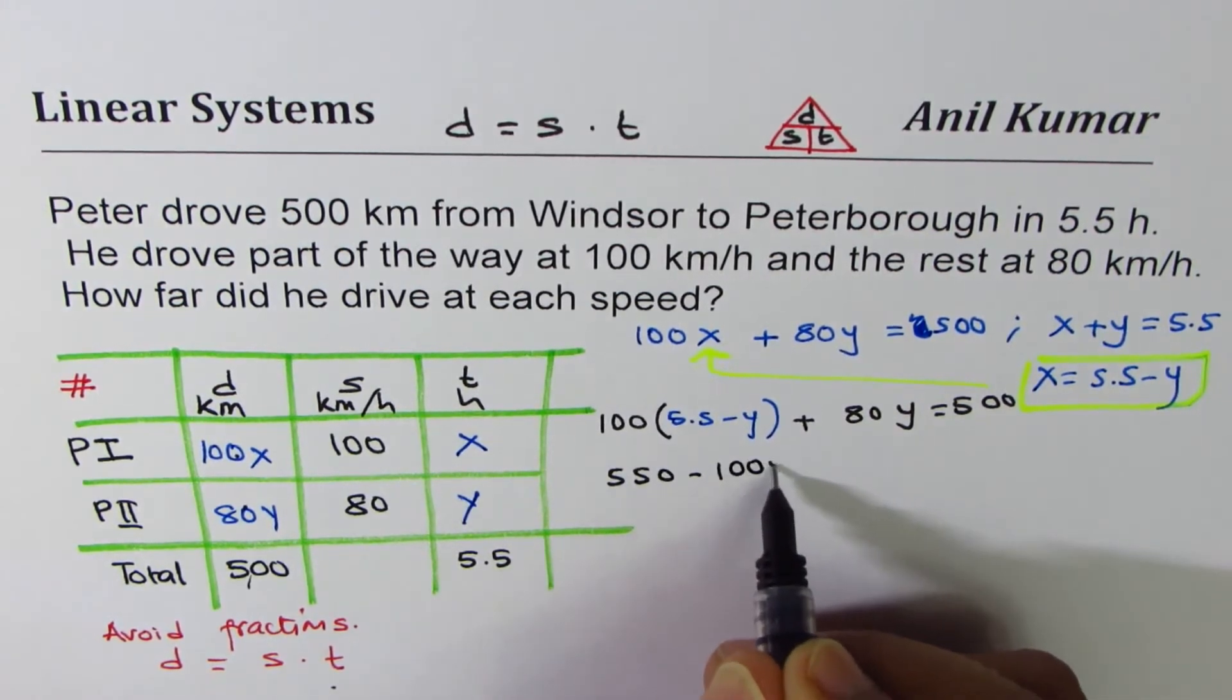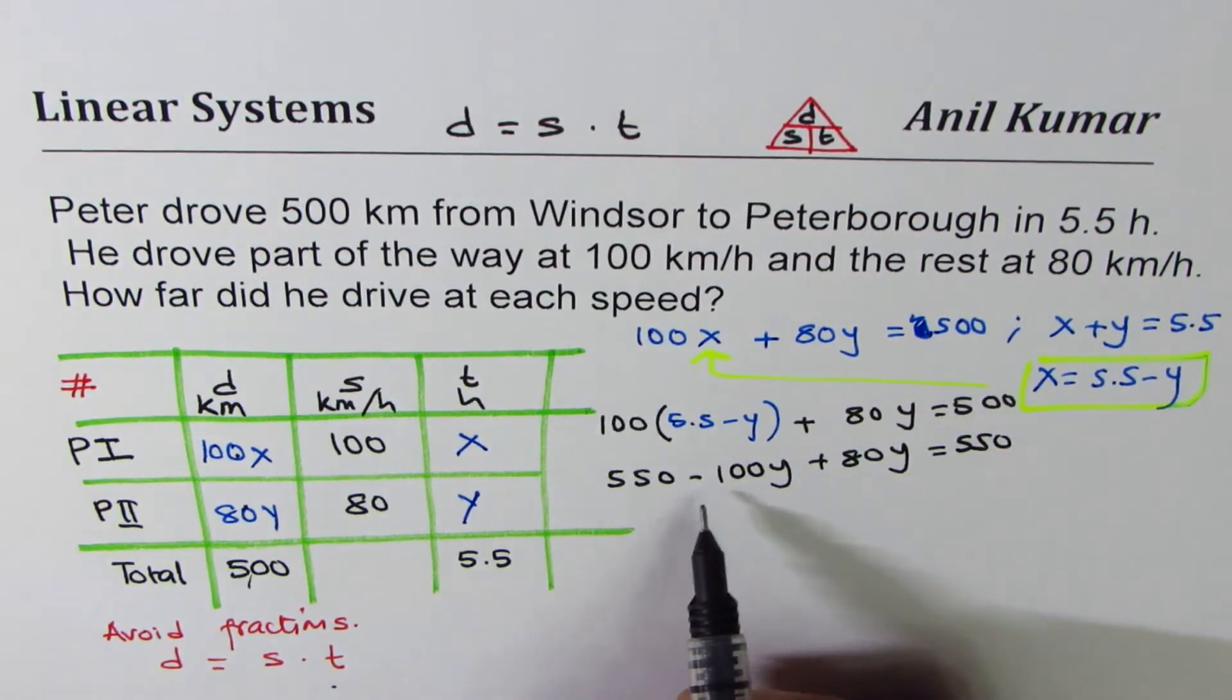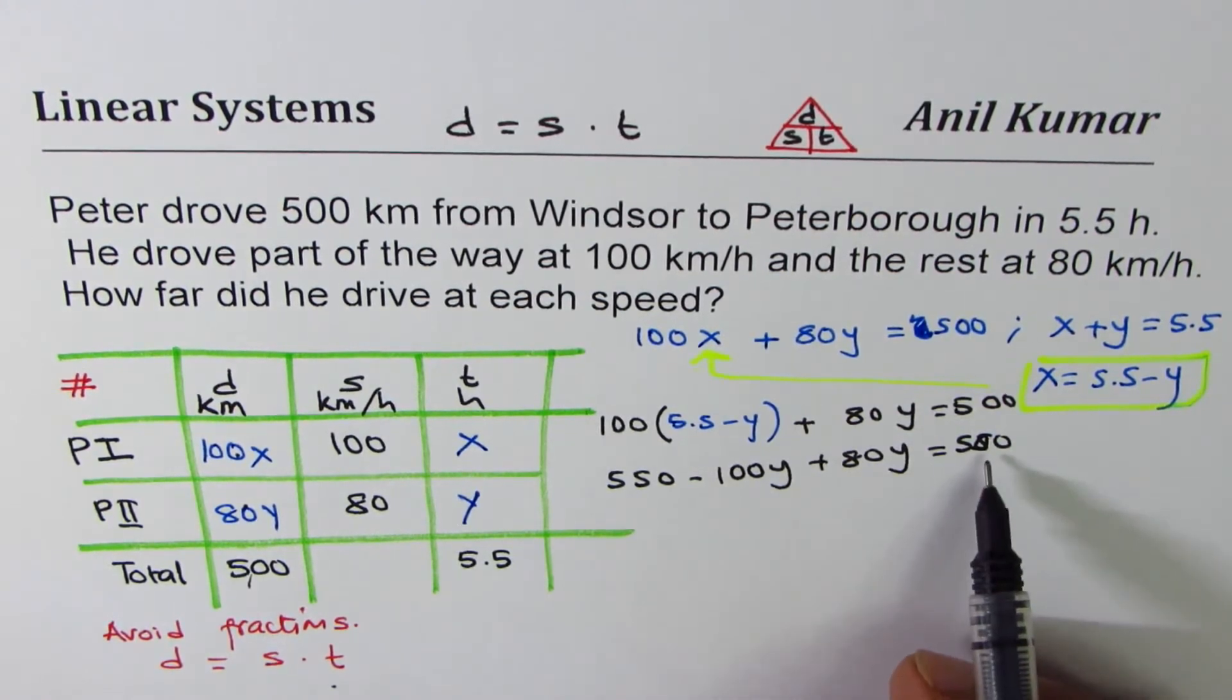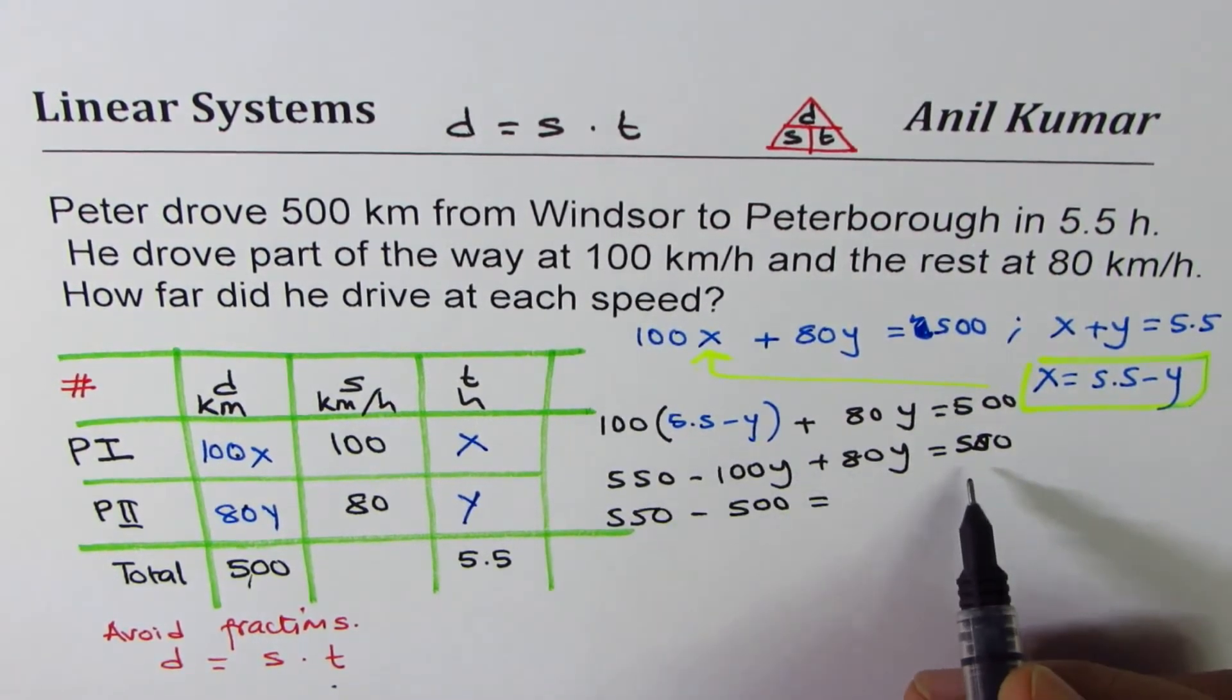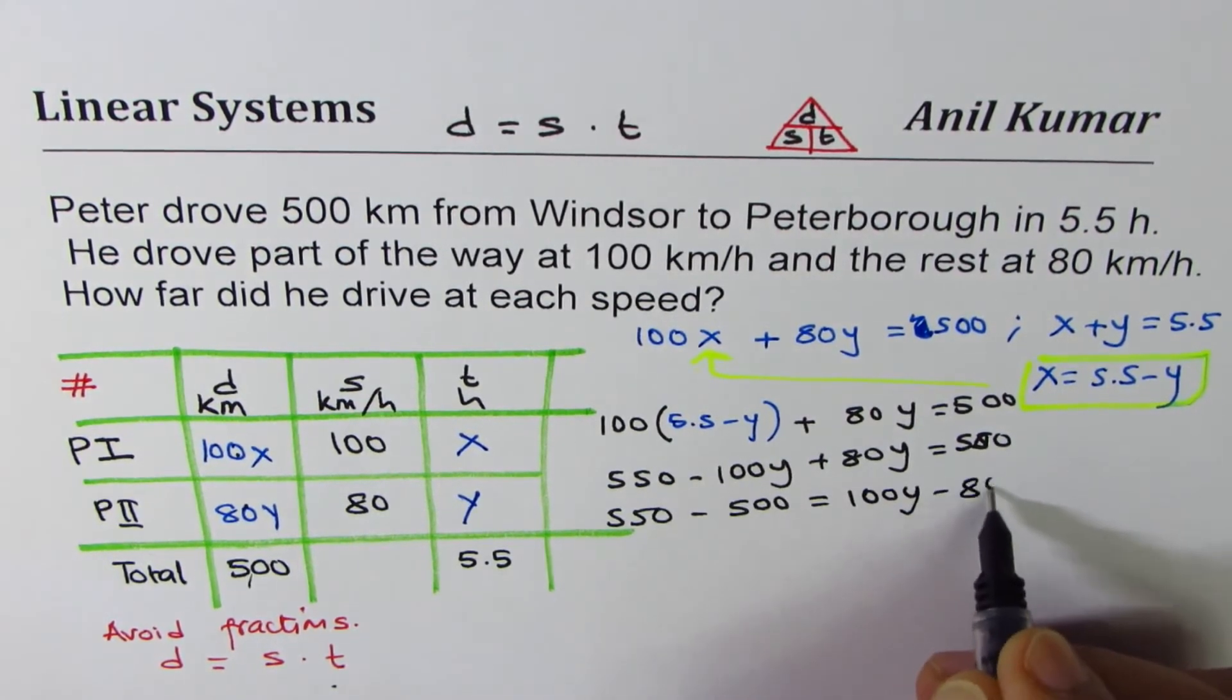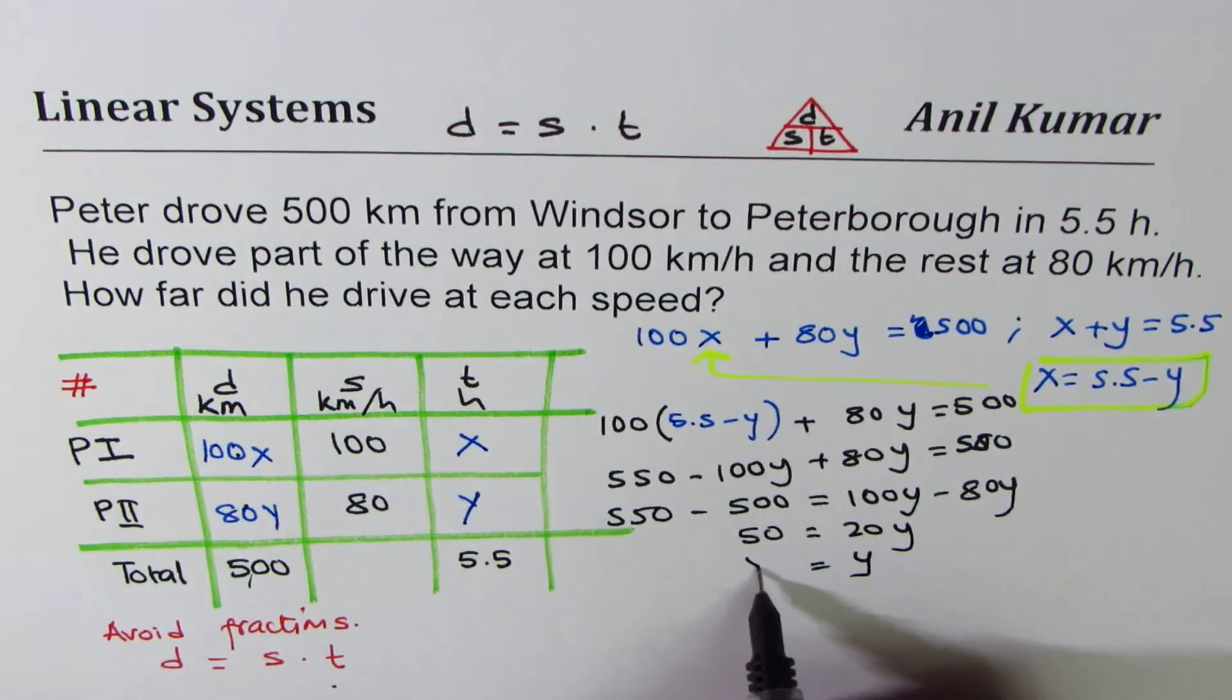Combine these y's, take 500 to the other side. We'll bring this 500 to the left: 550 minus 500 equals 100y minus 80y. That is 50 equals 20y, or y equals 50 over 20, which is 5 over 2.